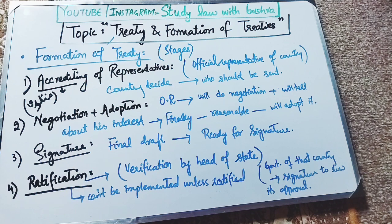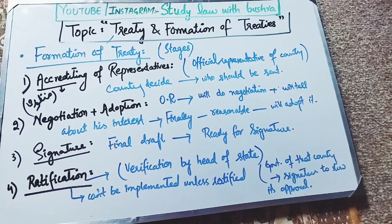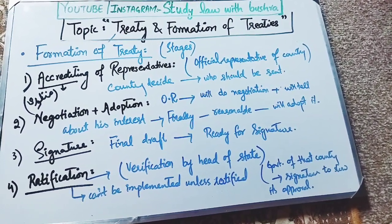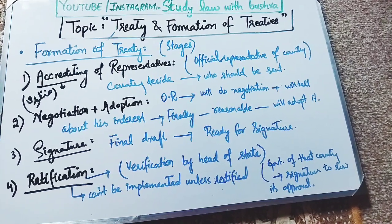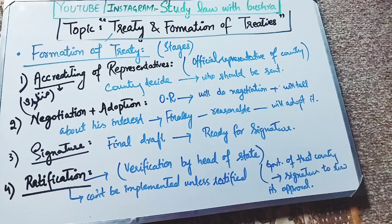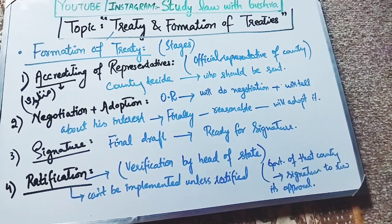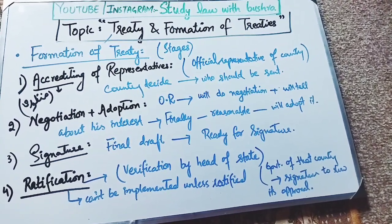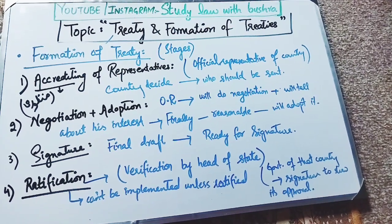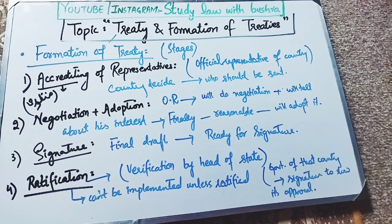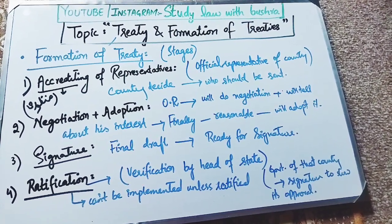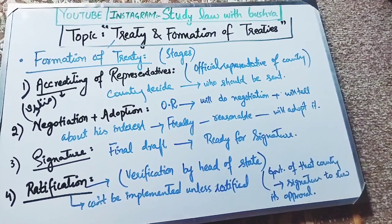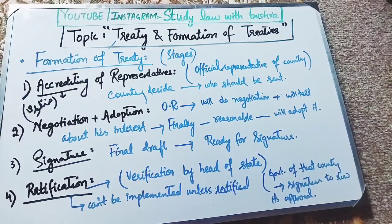Now we come to the formation of treaties — how are treaties made? There are several stages. The first stage is the accrediting of a representative. 'Accrediting' means to recognize or authorize. In this stage, each state decides who should be sent as the official representative of the country, who will negotiate with other states regarding the treaty. This is the first stage: deciding the official representative.